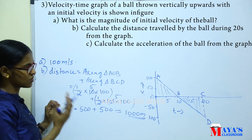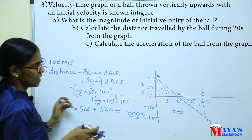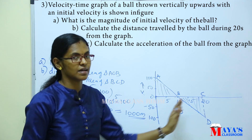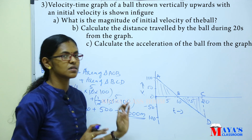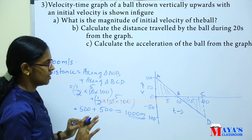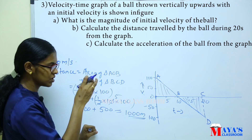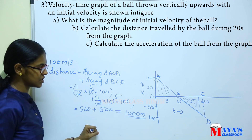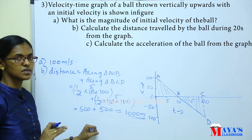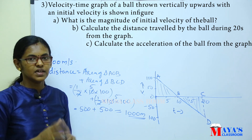Total distance equals 500 plus 500, which is 1000 meters. So in 20 seconds, the distance traveled by the ball is 1000 meters.